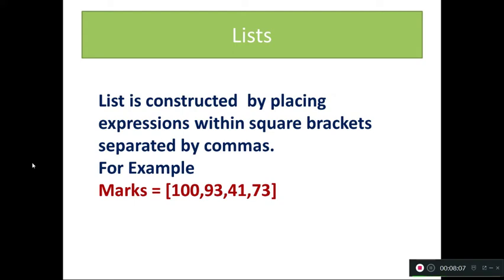And then the list. A list is constructed by placing expressions within square brackets, separated by commas. For example, you give marks like this: 100, 93, 41, 73, 4 — these state marks should be given in square brackets. Anything specified in square brackets is called a list. We will see list and tuple in detail as a separate topic later.